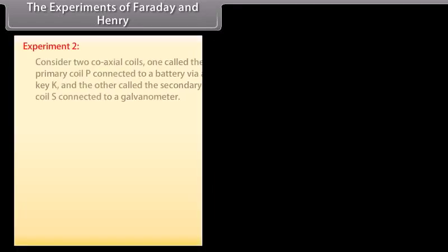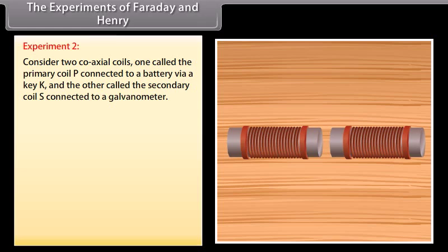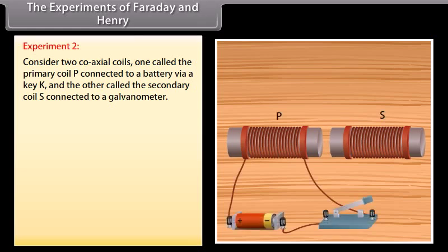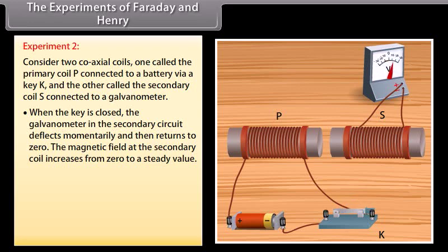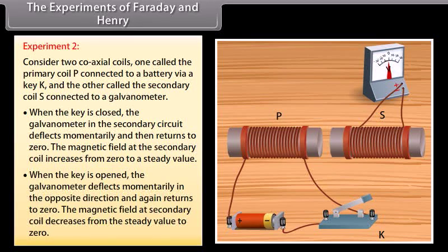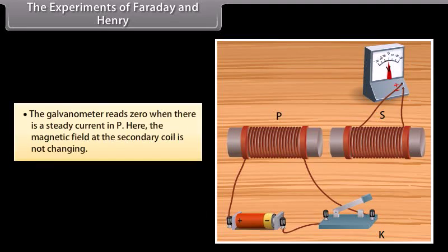Experiment 2: Consider two coaxial coils — one called the primary coil P connected to a battery via a key K, and the other called the secondary coil S connected to a galvanometer. When the key is closed, the galvanometer deflects momentarily and then returns to zero, as the magnetic field at the secondary coil increases from zero to a steady value. When the key is opened, the galvanometer deflects momentarily in the opposite direction, as the field decreases from the steady value to zero. The galvanometer reads zero when there is a steady current in P, since the magnetic field is not changing.